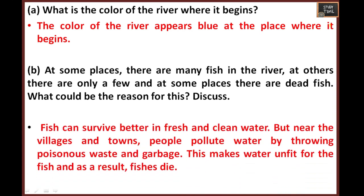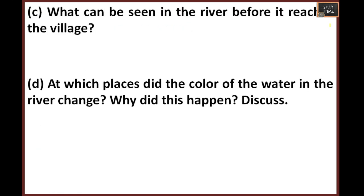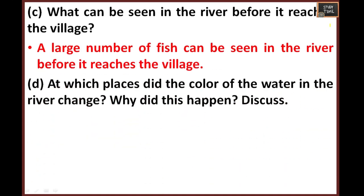Fish survive only in fresh and clean water. But near the villages and towns, people pollute water by throwing poisonous waste and garbage. This makes the water unfit for the fish and as a result the fish die. What can be seen in the river before it reaches the village? A large number of fish can be seen in the river before it reaches the village.